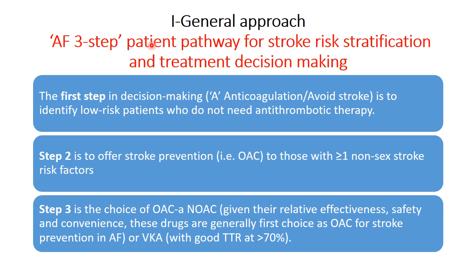The general approach for anticoagulation in patients with AF is also known as the AF three-step patient pathway for stroke risk stratification and treatment decision making. The first step is anticoagulation or avoiding stroke, and the aim is to identify low-risk patients who don't need antithrombotic therapy.